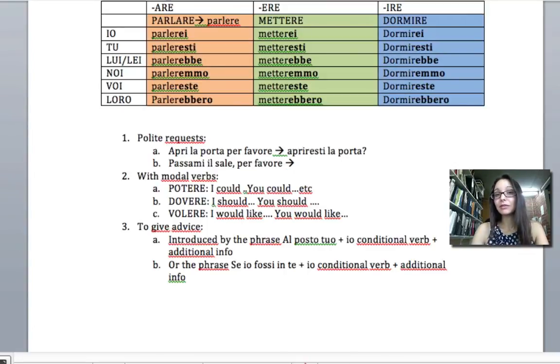Looking at a reflexive verb, for example, in the imperative it would be Passami il sale per favore, pass me the salt please. Let's instead say would you or could you pass me the salt: Mi passeresti il sale.